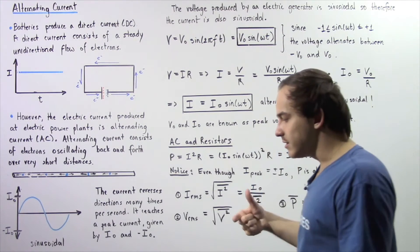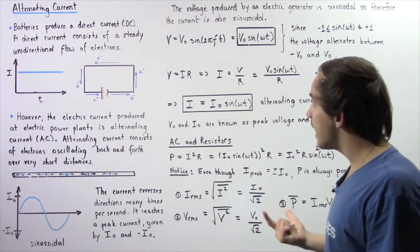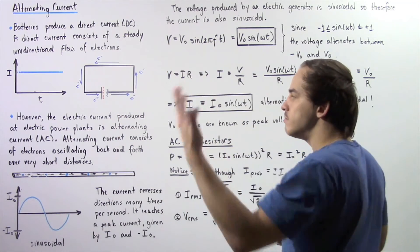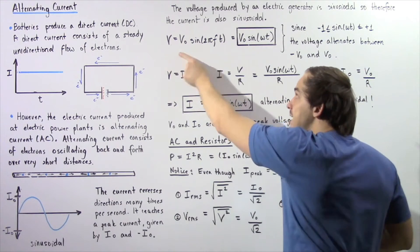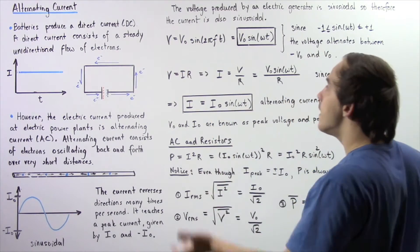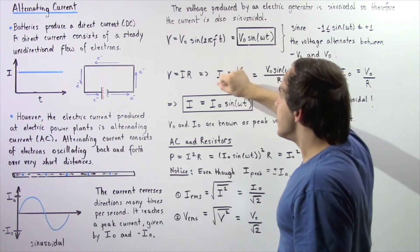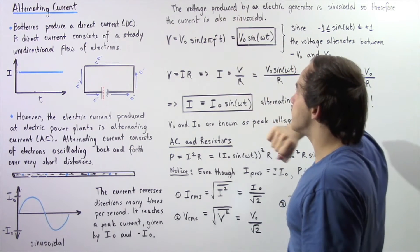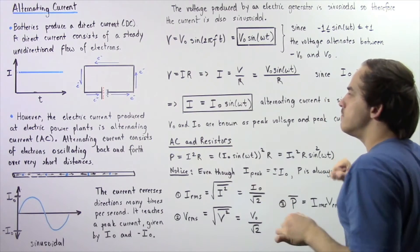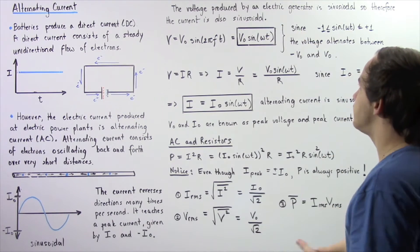If we want to calculate the voltage produced by an electric generator at any given moment in time, we can use the following equation. The voltage at any given moment in time is equal to the peak voltage V₀ — the highest possible voltage value — multiplied by sine of 2π times frequency times t. Since 2π multiplied by frequency equals omega (ω), the voltage at any moment is V(t) = V₀ · sin(ωt).